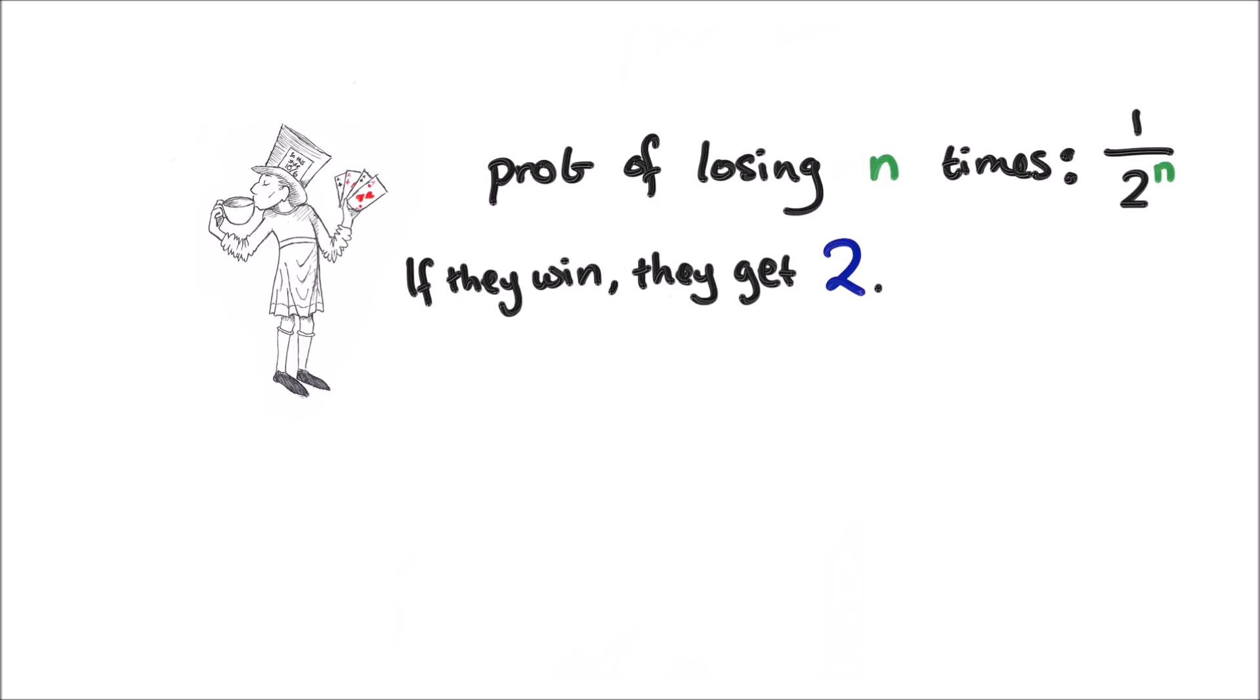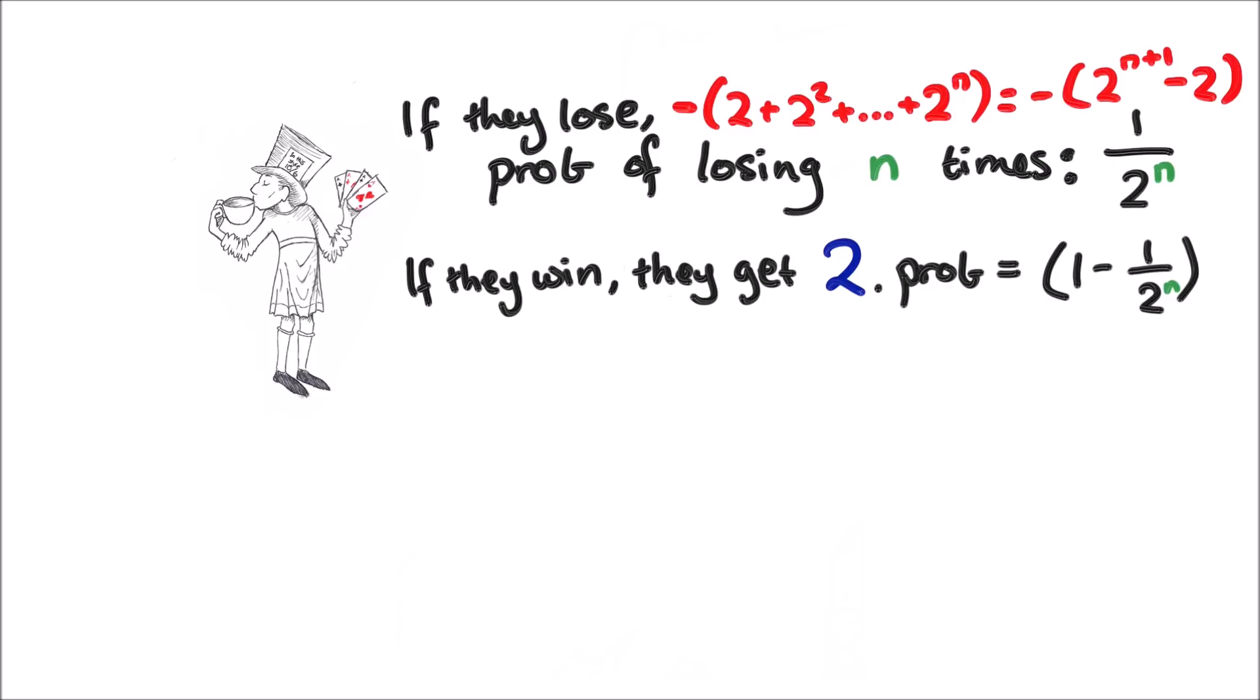And if they don't lose, then they win two, and that's most of the time with the probability of one minus one over two to the n. But in the unlikely event that they do lose, their total loss is this sum of losses so far, which we know is two to the n plus one minus two.